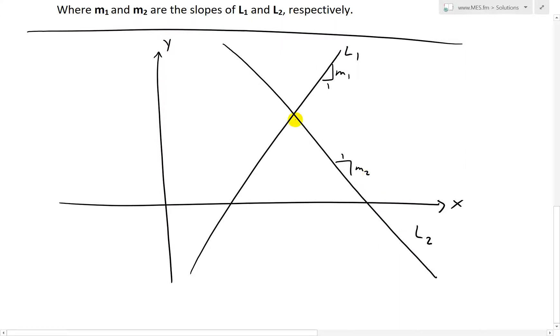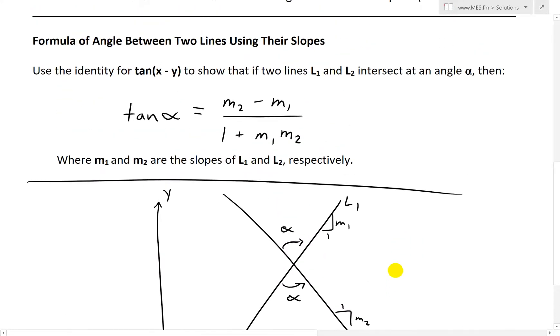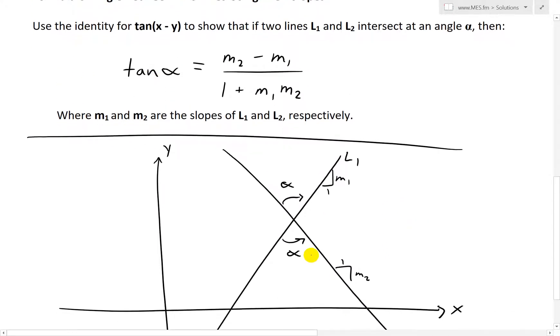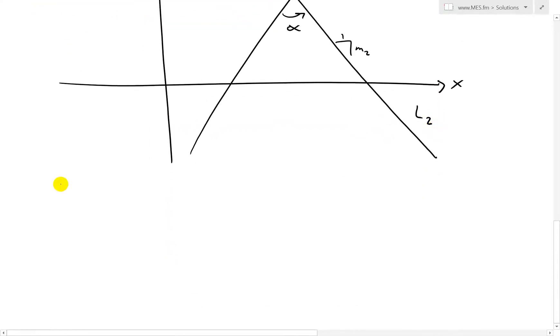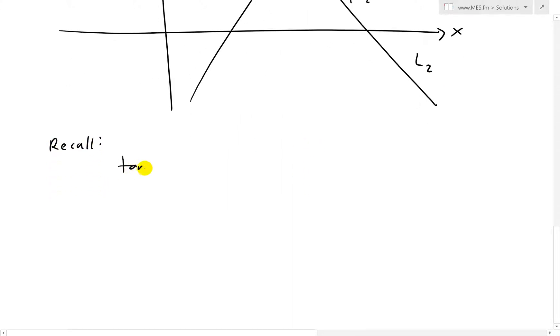And let's say we had a second line across here. I'm going to call this L2 with slope M2. They intersect here, so we have an angle we're going to call alpha. On the other side is also alpha by symmetry. Now we want to prove that tan alpha equals M2 minus M1 divided by 1 plus M1 M2.